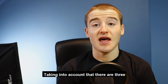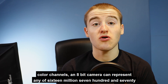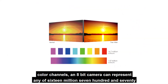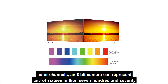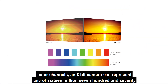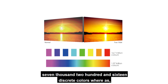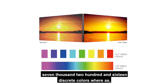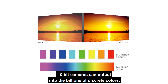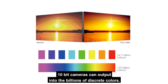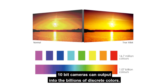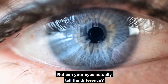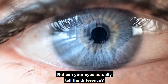Taking into account that there are 3 colour channels, an 8-bit camera can represent any of 16,777,216 discrete colours, whereas 10-bit cameras can output into the billions of discrete colours. But can your eyes actually tell the difference?